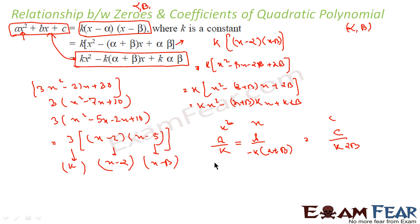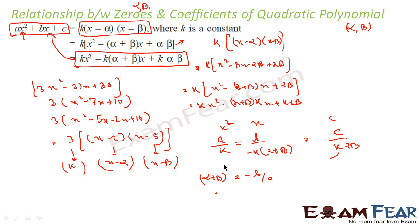So if you take these two, the k's cancel and we get α + β = −B/A. And from the constant terms, we get α·β = C/A.